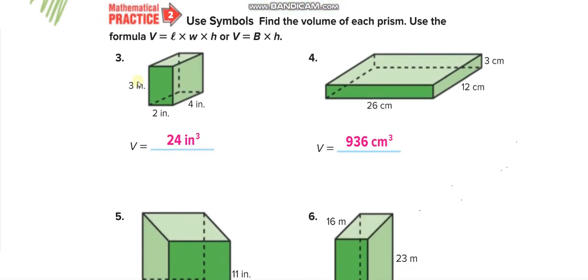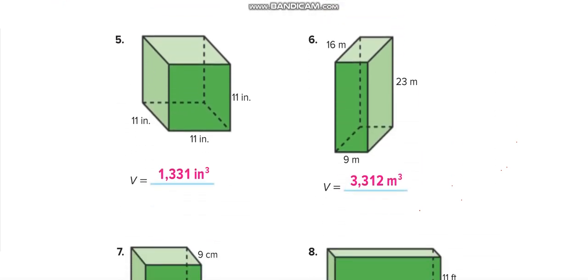The same thing again: 3 times 2 times 4 equals 24 inches cube. 26 times 12 times 3 equals 936 centimeter cube, because we are finding volume.